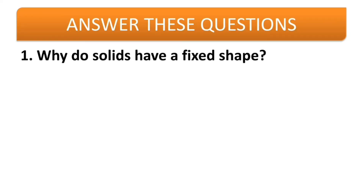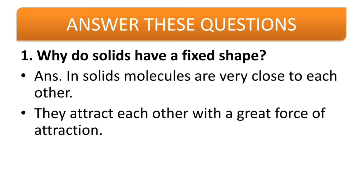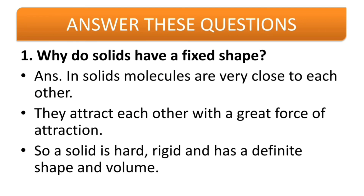Fifth, answer these questions — these are the long answers. First: why do solids have a fixed shape? In solids, molecules are very close to each other and they attract each other with a great force of attraction. Therefore, a solid is hard, rigid, and has a definite shape and volume.